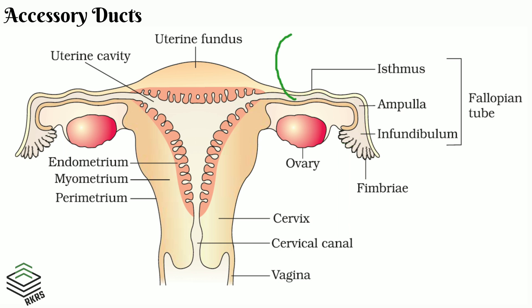The lumen of the oviduct is lined with ciliated epithelium, which facilitates the transport of the ovum. The lumen is the inner cavity of the oviduct. Ciliated epithelium is a modified epithelial tissue whose free surface bears cilia.